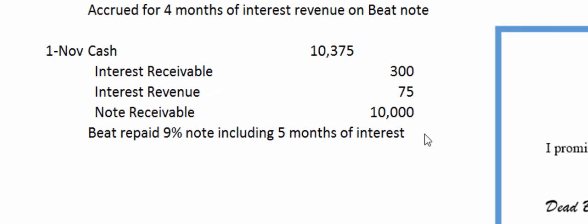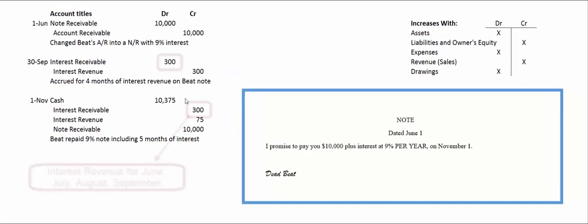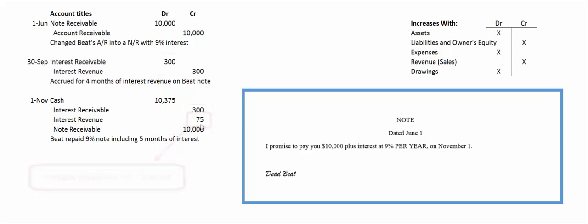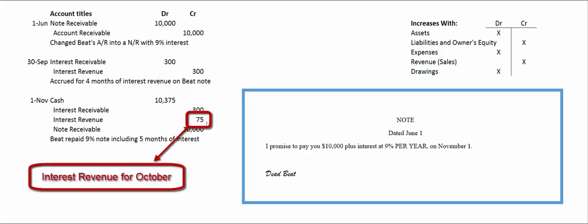The only interesting part is that the $300 represents interest revenue we've already booked, and the $75 represents one month's worth of interest revenue for October because we had not yet accrued for that.